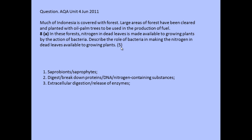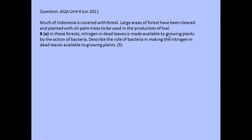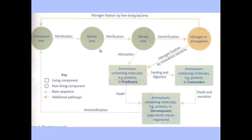What you're doing is looking at where the question is asking you to go from and to. Notice that the question is very specific — it says making it available to growing plants. It does not ask you to talk about absorption via active transport or how nitrogen is absorbed into the plants, just made available. So it's asking for the form of the nitrogen-containing compound that the plant can absorb, which in this case is nitrate.